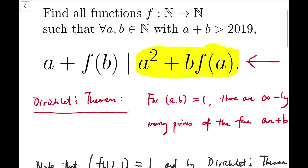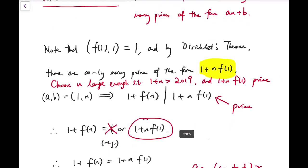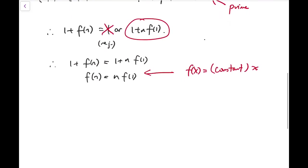And in fact, if you put this back into this divisibility relation, it will actually work. Say, if f of b is lambda b, then a squared plus b times f of a is just a squared plus lambda b a, and this is a plus lambda b, so it will really work.